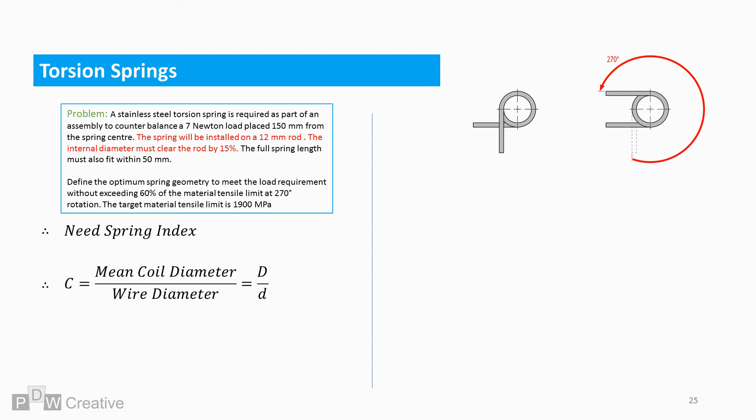The spring index is mean coil diameter over wire diameter. And the index is 7.57 in this instance. Let's just quickly check c. It is between 4 and 12, so it should be okay for manufacture. It's not difficult to form and it's not likely to tangle.